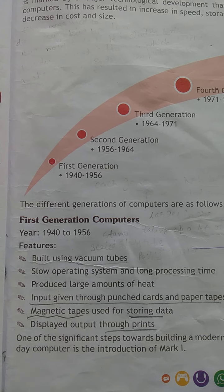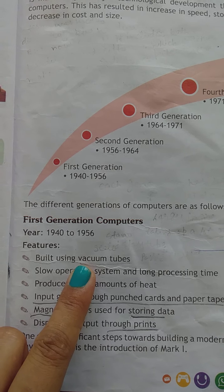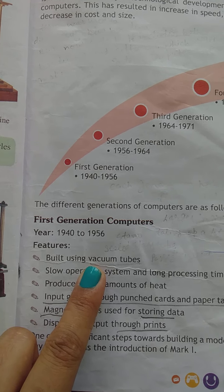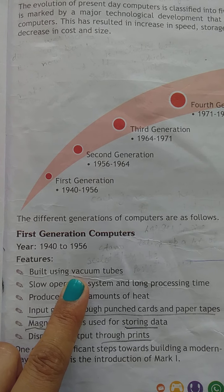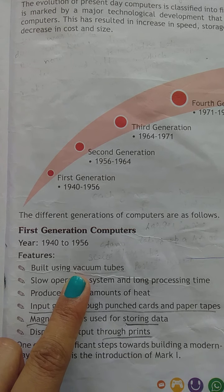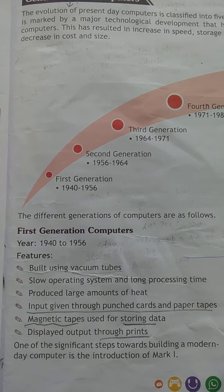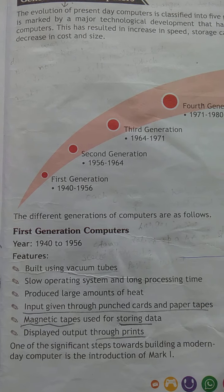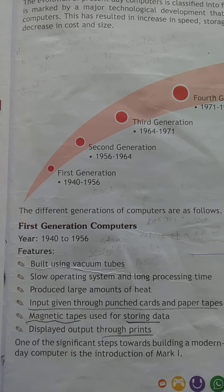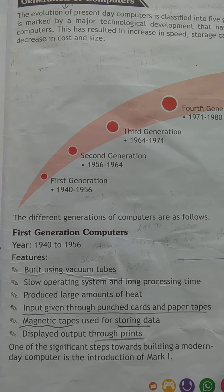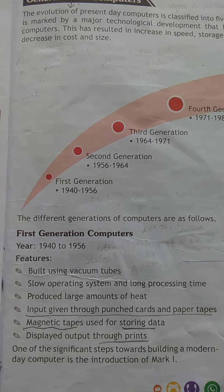In the first generation, we used vacuum tubes as a circuit component. The first generation's speed was very slow and they took much time for processing.